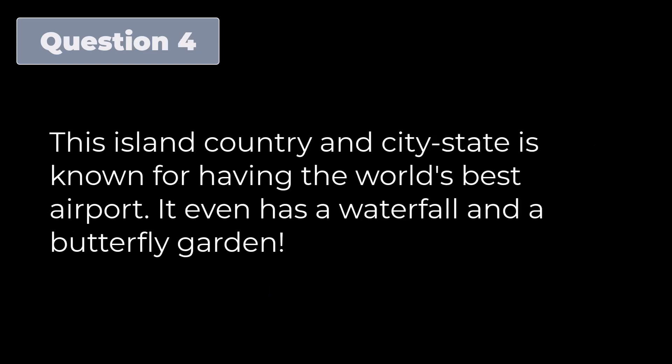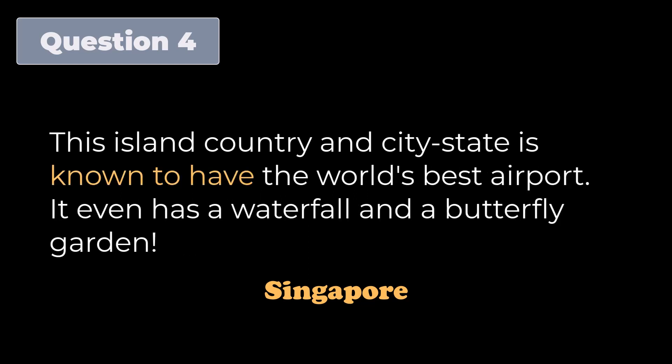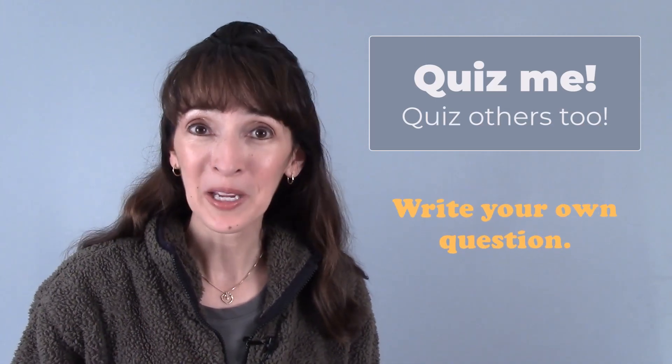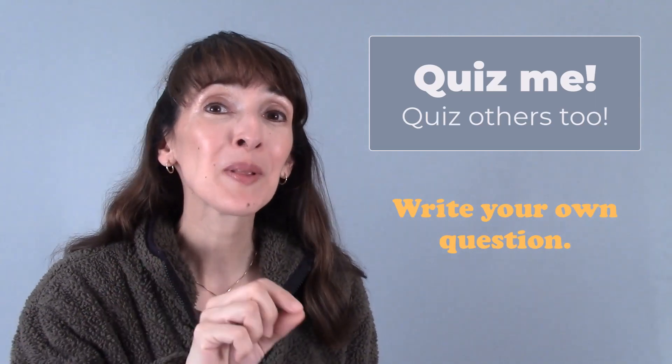Four: This island country and city-state is known for having the world's best airport — it even has a waterfall and a butterfly garden. Answer: Singapore. By the way, there's another variation we can consider: we can say 'this island country and city-state is known to have the world's best airport.' We can use 'known' plus an infinitive. Do you want to quiz me and other viewers on famous people and places? Write your own question — you have to use 'known' plus a preposition.